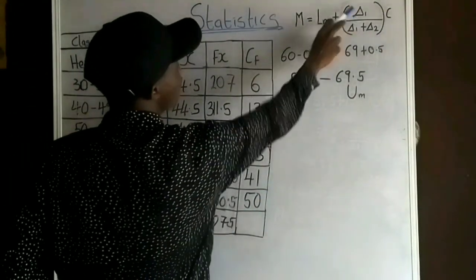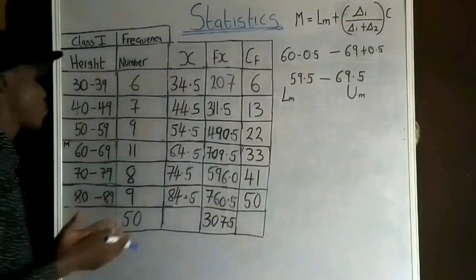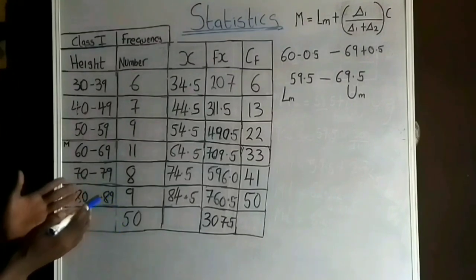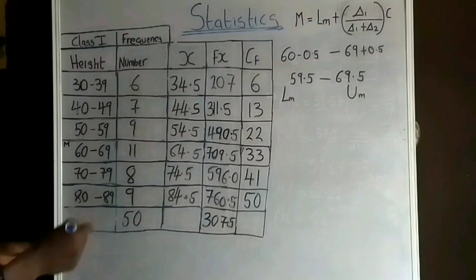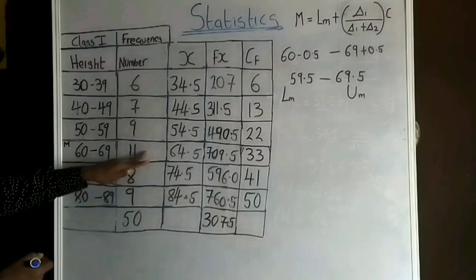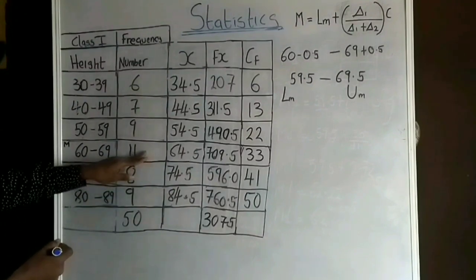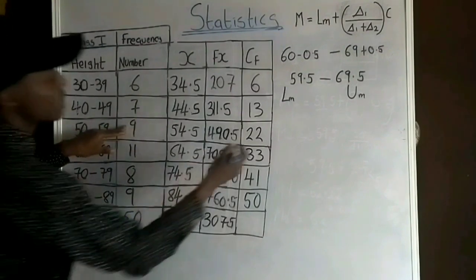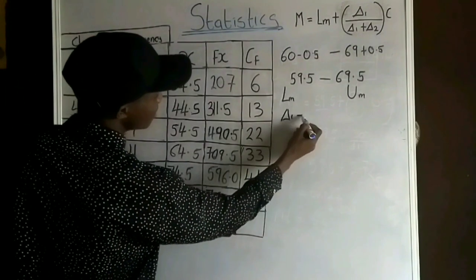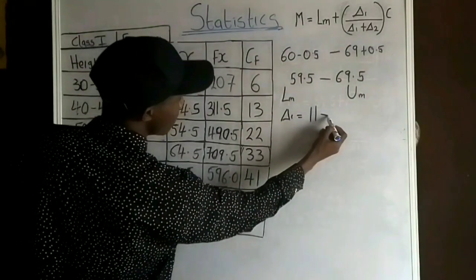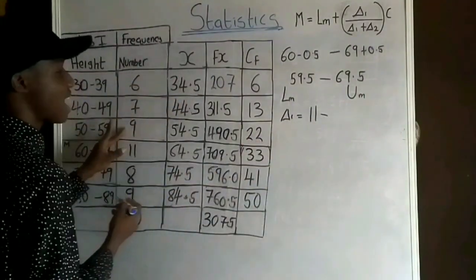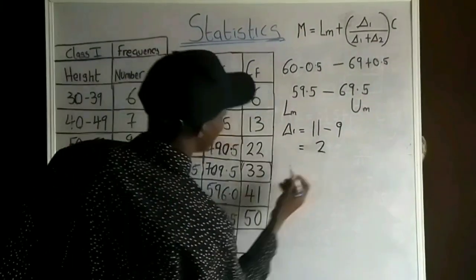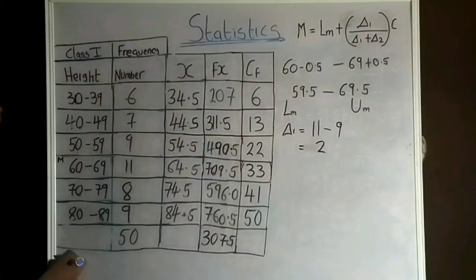δ₁ is the difference between the frequency of the modal class and the class before it: 11 − 9 = 2. So δ₁ = 2.